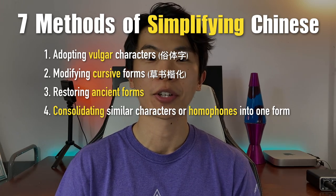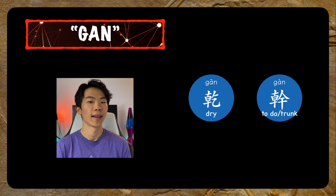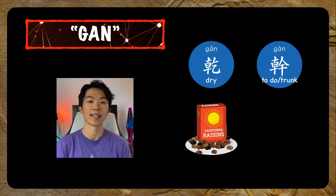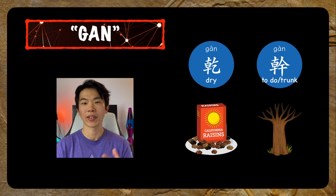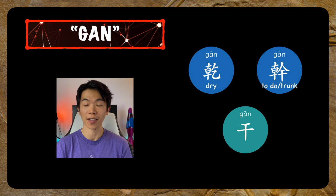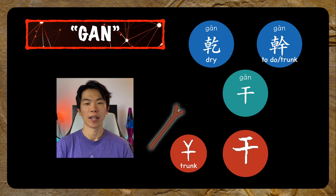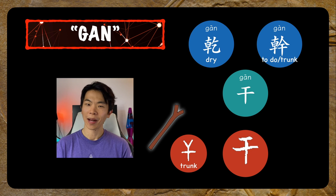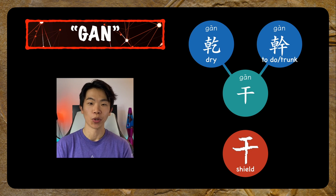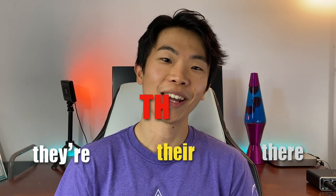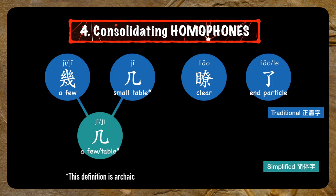The fourth method is consolidating similar characters or homophones into one form. This method reduced the total number of characters but also increased the number of homonyms in Chinese. For example, take these two traditional characters: 干 (dry) and 干 (to do or tree trunk). Because of their similar pronunciation, they were both replaced by this character 干, which itself is a separate character meaning tree trunk or stem. It would be like if 'there,' 'their,' and 'they're' were all spelled T-H-E-R-E. A couple more examples include 几 (ji) and 了 (liao).